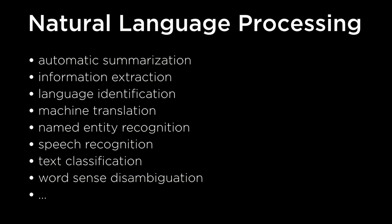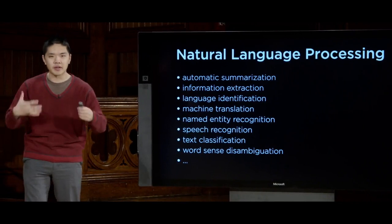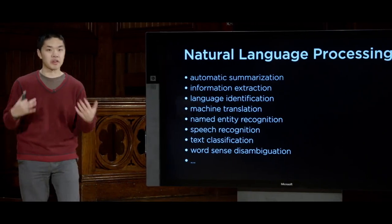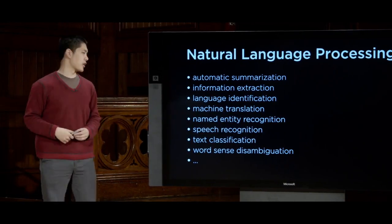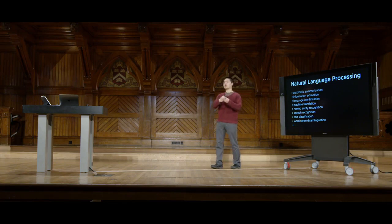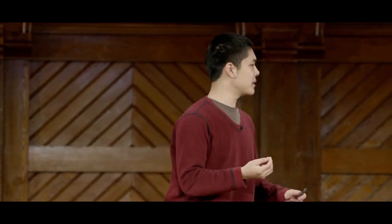Text classification more generally is a broad category where we take some text and put it into a category. We've seen these classification problems and how we can use statistical machine learning approaches to solve them. Then there's word sense disambiguation — unlike numbers, where AI has precise representations, words are fuzzy in meaning. Words can have multiple different meanings and natural language is inherently ambiguous. If an AI wants to understand natural language, it needs to disambiguate between different possible meanings of words.